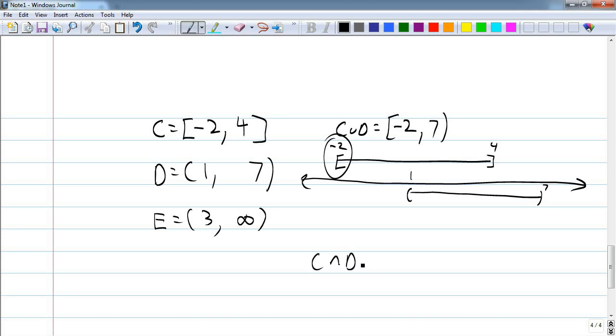How about C intersect D? What's the overlap between C and D? What's in both C and D? The overlap is right here. So these numbers are in both—it starts at 1 and we go up to 4. The 1 is not included because it's a parenthesis. The 4 is included because of the bracket. That's intersection.